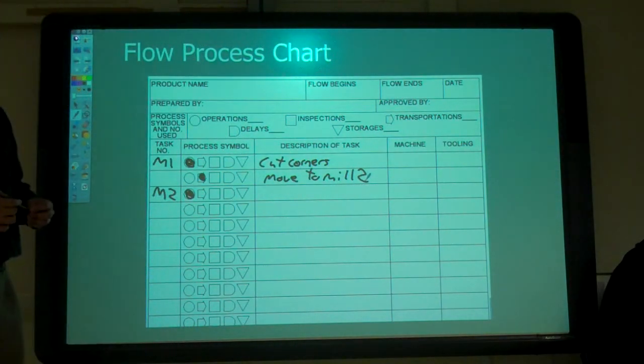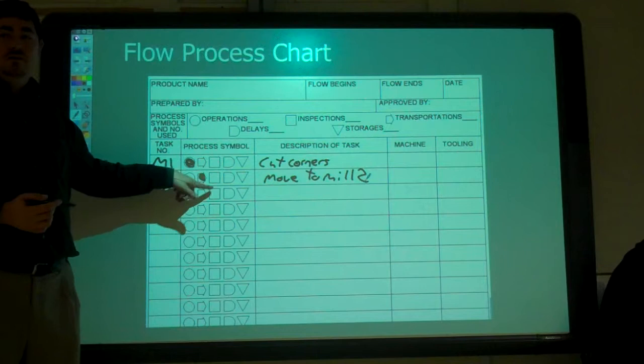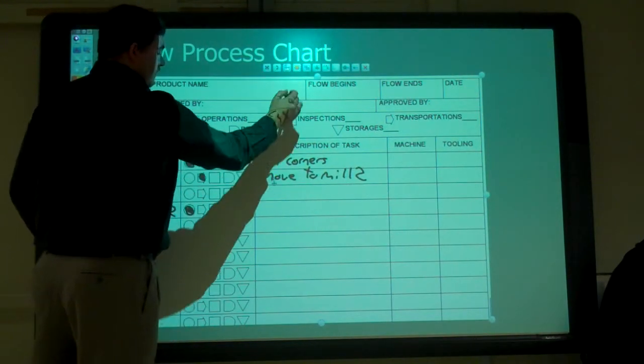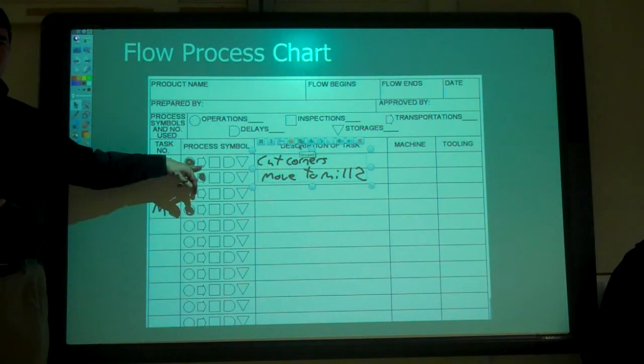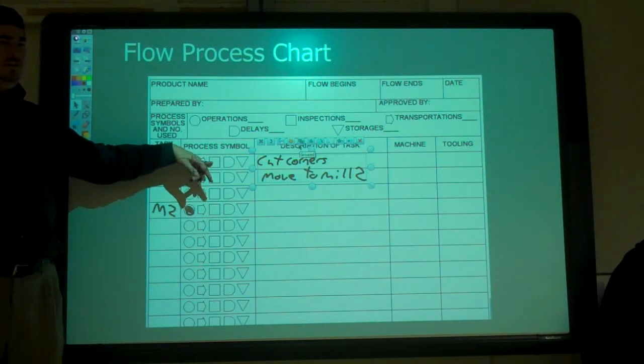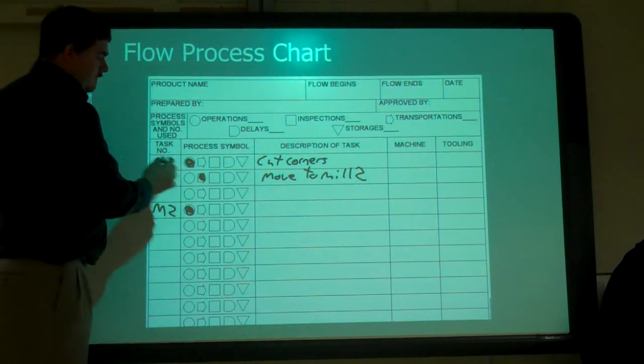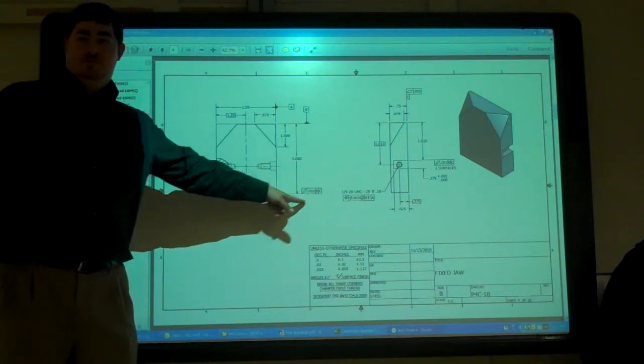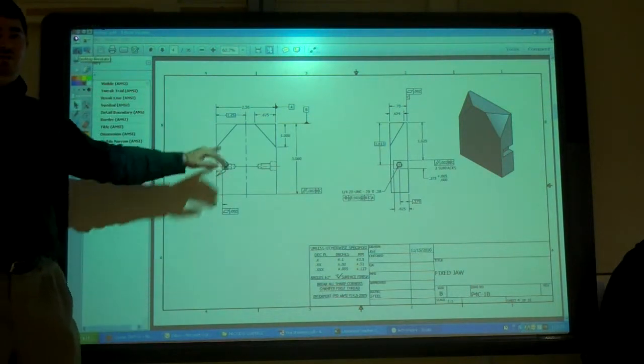After you figure that out, we'll do a flow process. How's it going to move in the shop? Task one, operation one. After we get done the first mill, is it going to go somewhere for storage? Is it going to move to another mill that's doing the second operation? Maybe we've got one mill doing the first operation, a second mill doing the second operation. So now it's going to transport. You might want to inspect it - make sure that process is good.